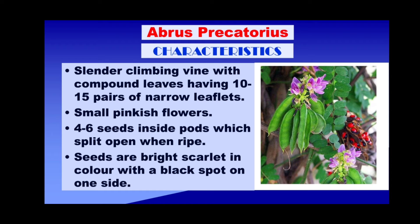As you can see from this image, Abrus precatorius is a beautiful plant. It is actually a climbing vine with compound leaves featuring a number of narrow leaflets — generally 10 to 15. Flowers are small and pinkish. The most important part of the plant, of course, are the seeds, which are present inside pods, as you can also see in this image. Generally four to six seeds are inside each pod, and the pod splits open when it gets ripe. The seeds are bright scarlet with a black spot on one side.